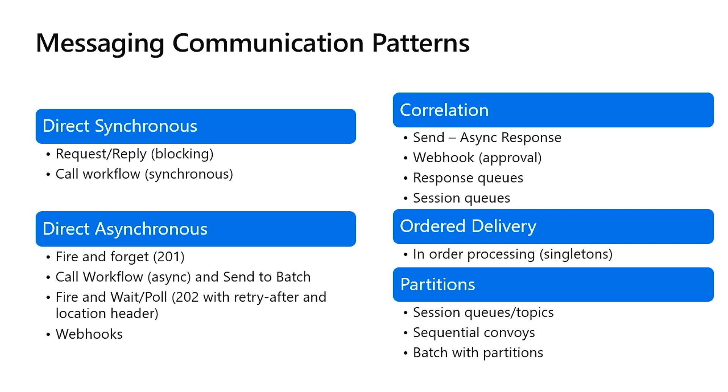For direct asynchronous messaging, you can do fire-and-forget — call some HTTP endpoint and your Logic App fires and says it'll do the work and you're done with a 201. You can also do call-workflow async with the 202 pattern, returning a retry-after header and a location header so the caller knows to call back after a certain time. If a service implements that async pattern and you use our HTTP action, we automatically follow the 202 pattern for you.